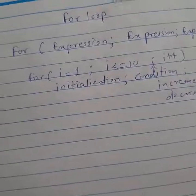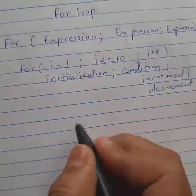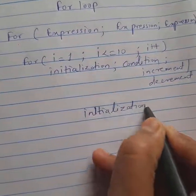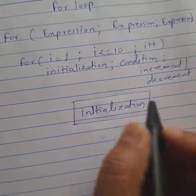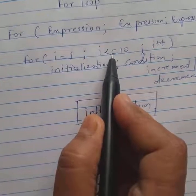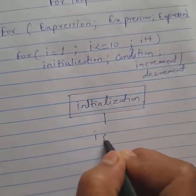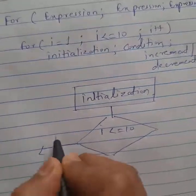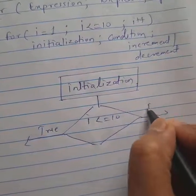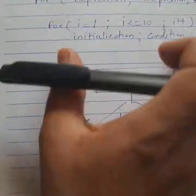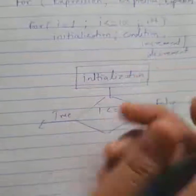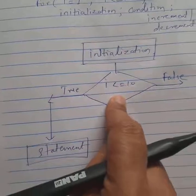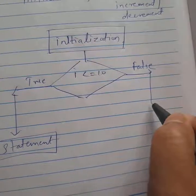This is the syntax of the for loop flowchart. Starting from the initialization part, suppose i = 1. Control will go to the condition, for example 'i <= 10'. If this condition is true, the statement inside the for loop will execute. If the condition is false, the controller will go out of the loop.